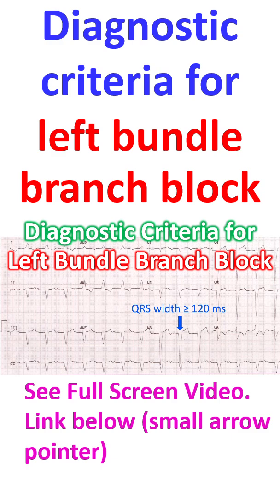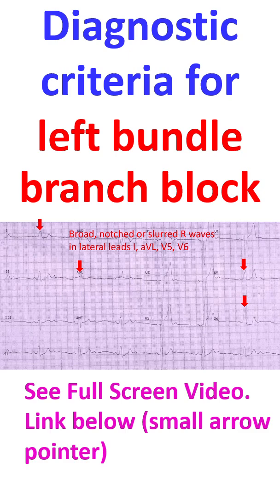Complete left bundle branch block has widening of the QRS complex to 120 ms or more. If an LBBB pattern is seen with QRS width less than 120 ms, it may be called incomplete left bundle branch block, though that term is rarely used in practice.